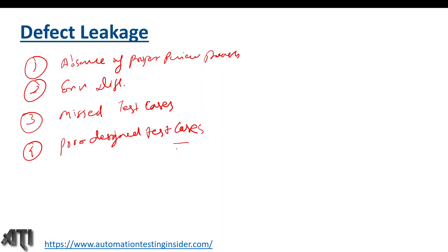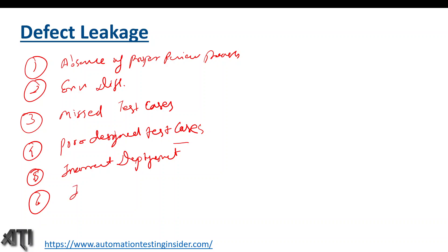Another reason is poor design of test cases due to misunderstanding of requirements by the testing team. Another reason is incorrect deployment into the UAT or production environment. And also incorrect data — if you are not using proper test data, the chances of defect leakage are higher. We should always use proper test data to test any particular functionality.